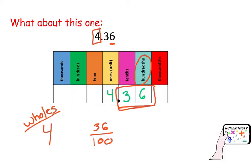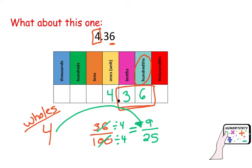Can I simplify this fraction? 36 and 100 are both even, so I can divide by 2, but I notice I can also divide by 4. Both are divisible by 4, so I am going to try 4. If you struggle with your multiples, you can start by dividing by 2 — you will get the same answer. 36 divided by 4 is 9, and 100 divided by 4 is 25. Nine twenty-fifths is already in simplest form. But don't forget to include your whole number — this is a mixed fraction. So the final answer is 4 and nine twenty-fifths. This mixed fraction is equivalent to the decimal 4 and 36 hundredths.